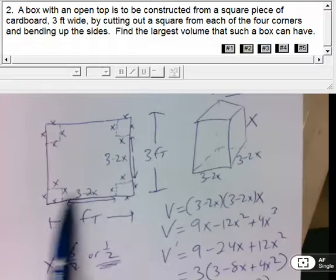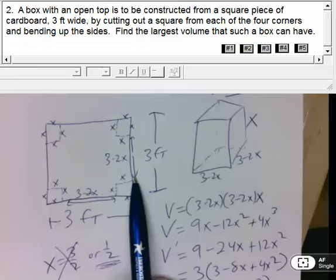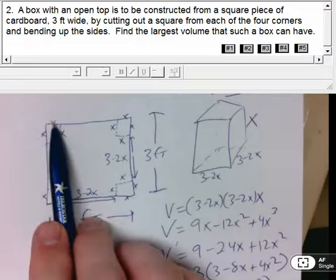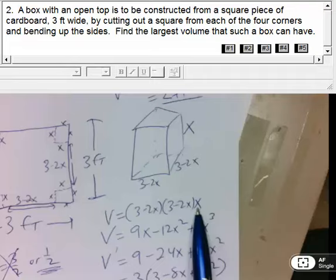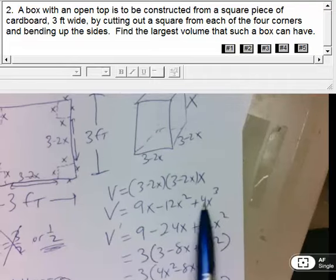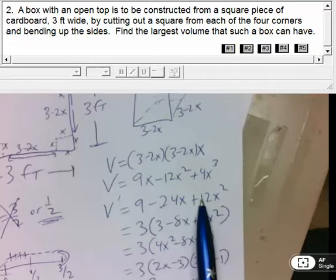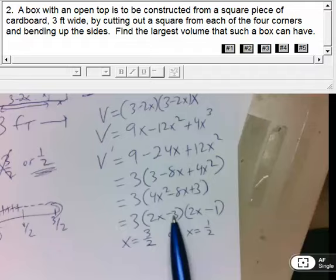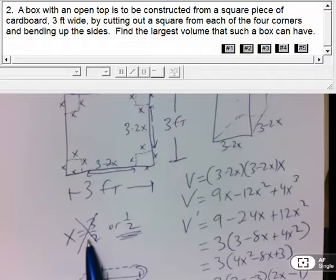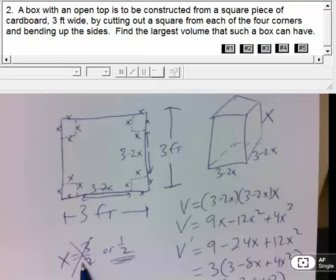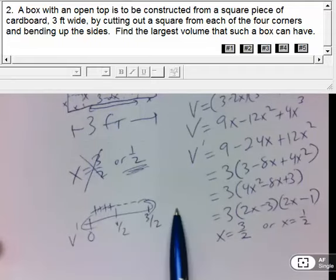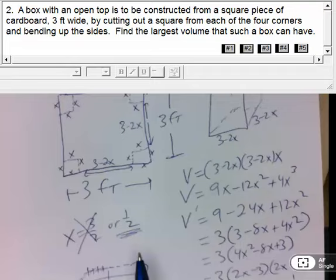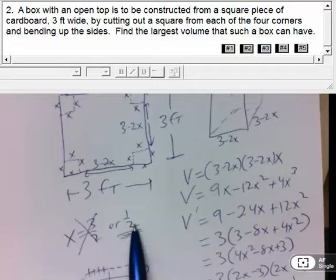So again, starting with a 3 by 3 square, cut out corners of value X. That leaves me with a picture like this. My volume formula is based on the dimensions of those sides. I simplified, took the derivative, simplified, found those critical values, and realized one of my critical values doesn't actually make sense in the context of the problem. If I go beyond 1 and a half, it's not going to make any sense. So 1 half was the only one that made any sense.